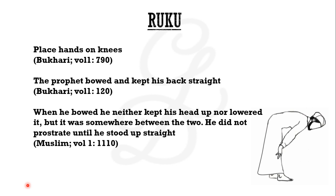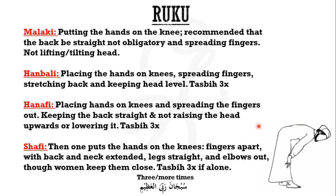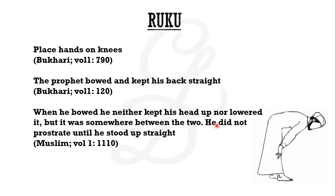According to Bukhari, the Prophet placed his hands on his knees and kept his back straight when he bowed. He neither kept his head up nor lowered it — it was somewhere between the two. He did not prostrate until he stood up straight. So: place hands on knees, keep the back straight, do not tilt the head — this is how you perform Ruku.